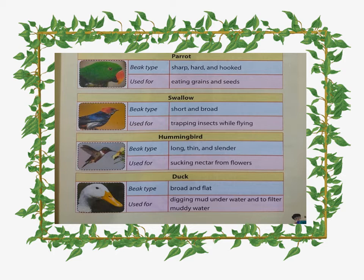Next is the parrot. Its beak is sharp, hard, and hooked, used for eating grains and seeds. Next is the swallow. Its beak is short and broad, used for trapping insects while flying.